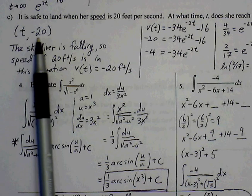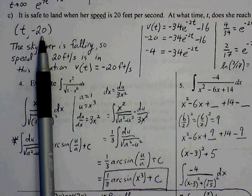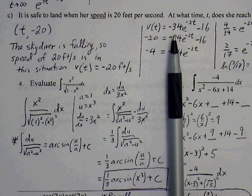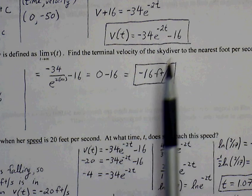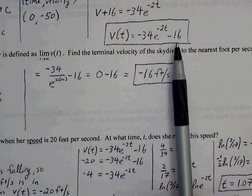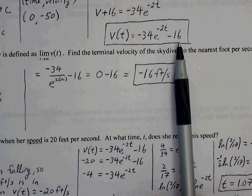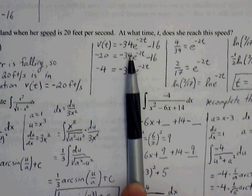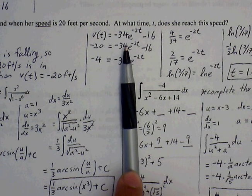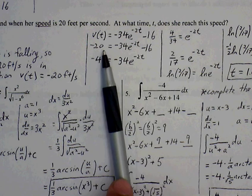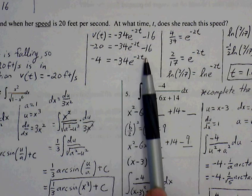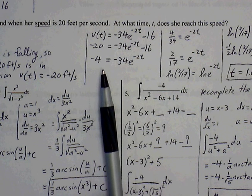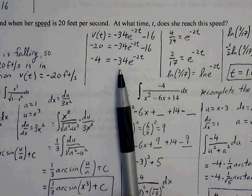So we're trying to find what is the time going to be where the velocity will be negative 20. So we go back to our specific velocity equation, which we found from part A, and we simply plug in negative 20 in for velocity and solve for t. So then v(t) is equal to, we simply replace v(t) with negative 20. And we solve for t. So first, we want to get this by itself, so let's add 16 to both sides. We get negative 4 is equal to negative 34e to the negative 2t.